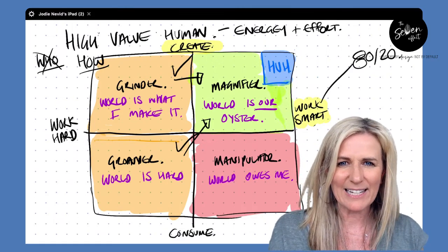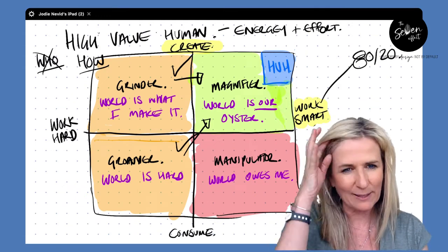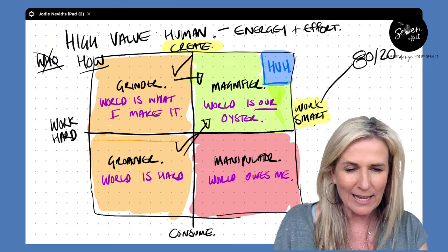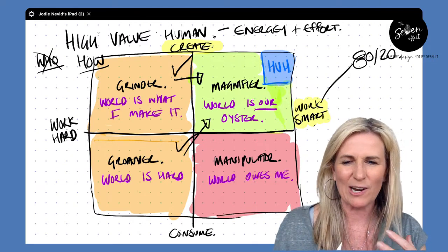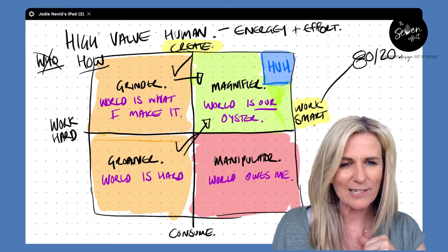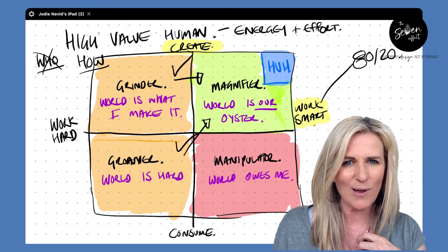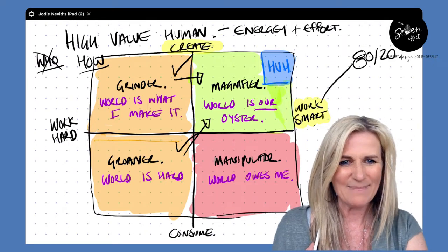So that's it. That's the how to be a high value human model. Well, it's really just unpacking the matrix. If you want to get the steps on how to actually get there, stay tuned. I'll be sharing that over the next few days. I hope you enjoyed this. Any questions, post them in the comments below as well. I'll be happy to answer them. Let me know what you think. Bye-bye.